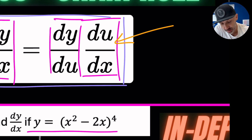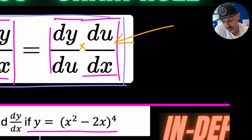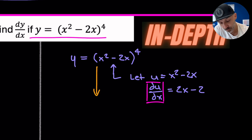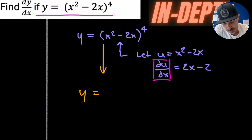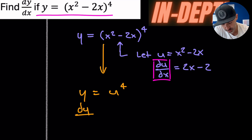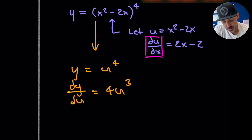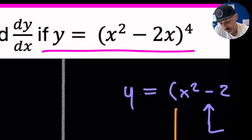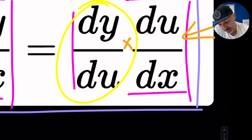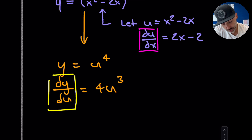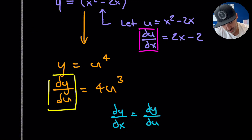The chain rule says that if we multiply du/dx by dy/du we should get our answer. So we rewrite the first expression in terms of u: y equals u to the power of 4. Differentiating y with respect to u gives dy/du equal to 4u³. We now have both halves of the chain rule — dy/du and du/dx.